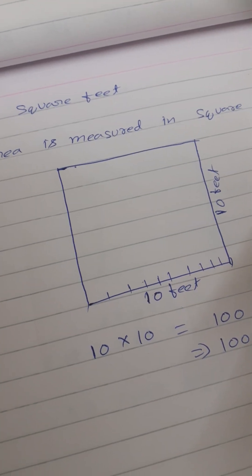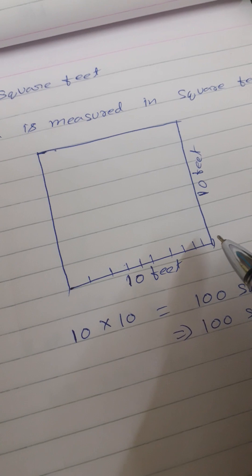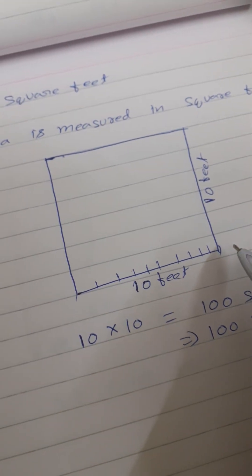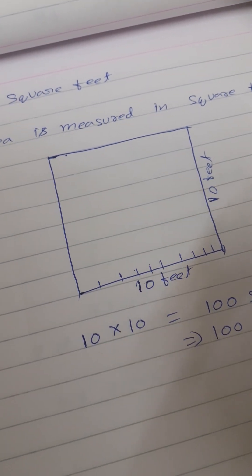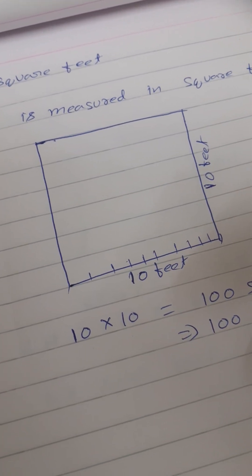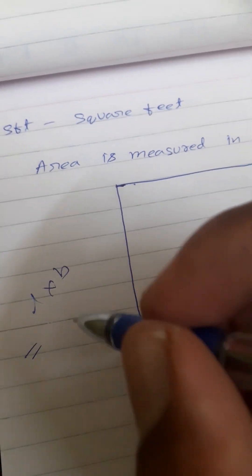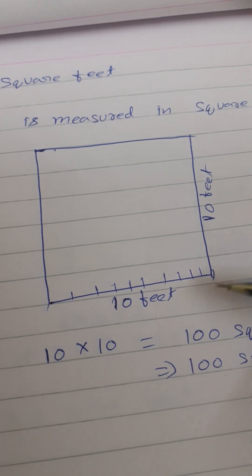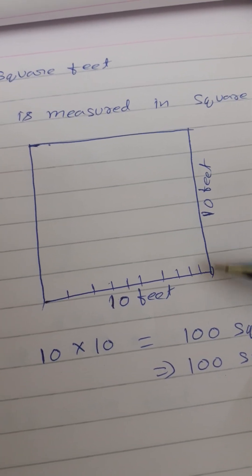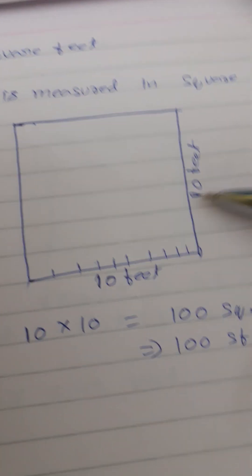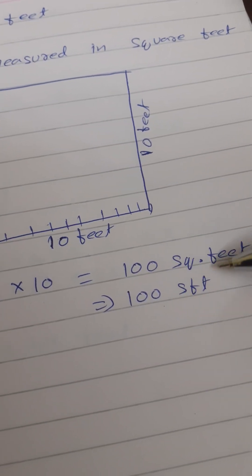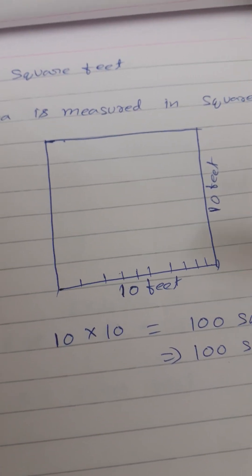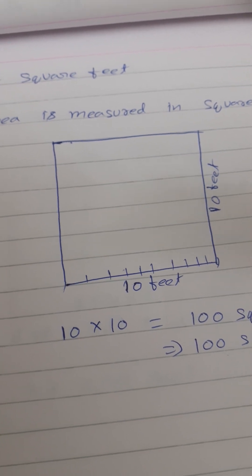Area cannot be measured in running feet. Running feet is the distance from one point to the other point. Whereas square feet means if someone asks us to calculate the area of a room, area is nothing but length into breadth — L into B. So if we multiply length into breadth, we get the area. In this example, the length of the room is 10 feet and the breadth is 10 feet, so 10 feet into 10 feet gives us 100 square feet. That is the area of the room.